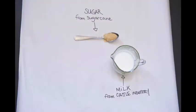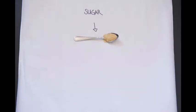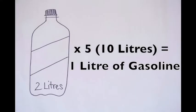Then of course you take all of these things and put them in a truck for transport. Well, let's look at gasoline — it takes ten litres of water to make one litre of gasoline. That's five of these two-litre bottles that we looked at earlier, and a litre of gas doesn't get you very far.